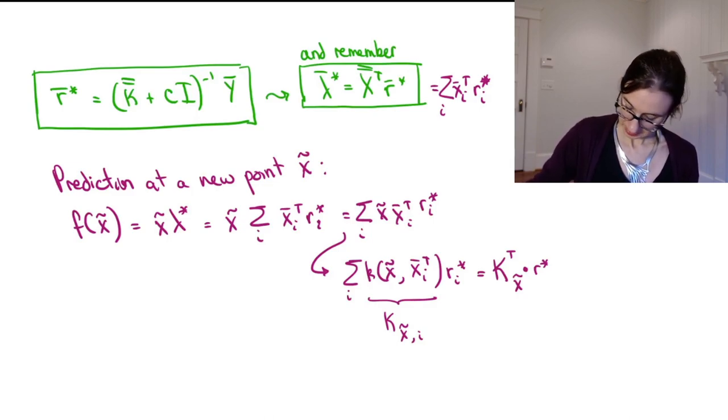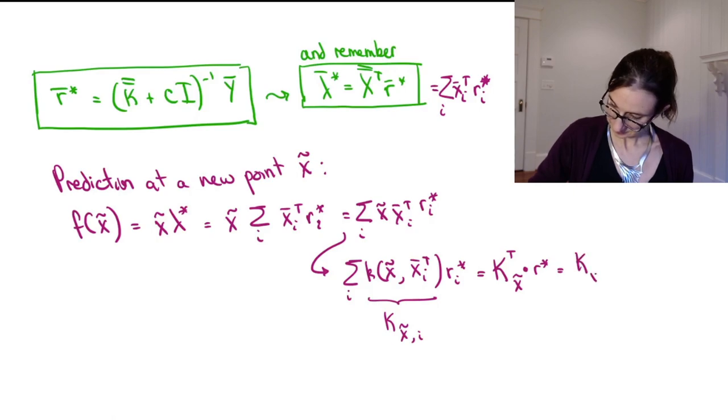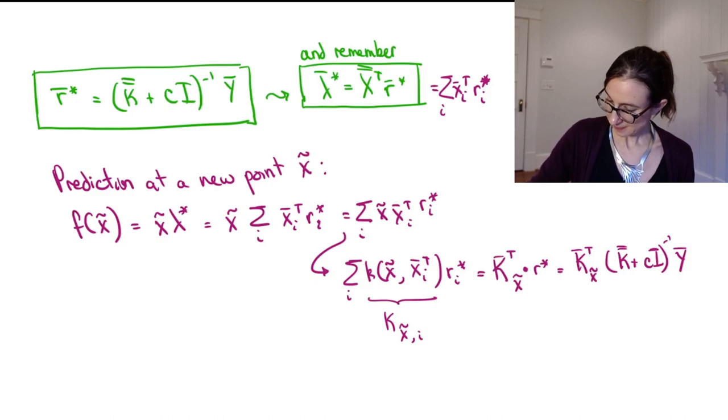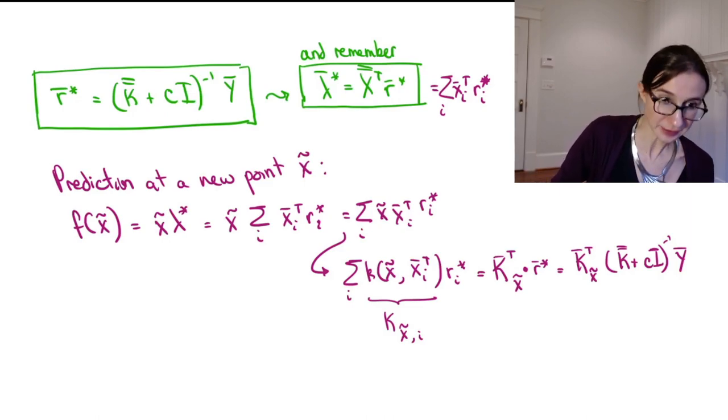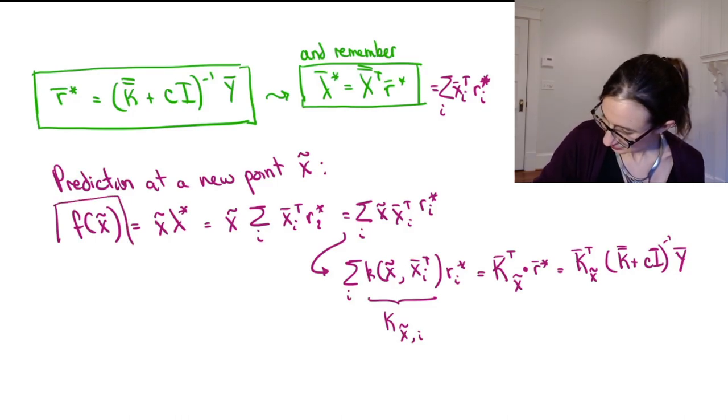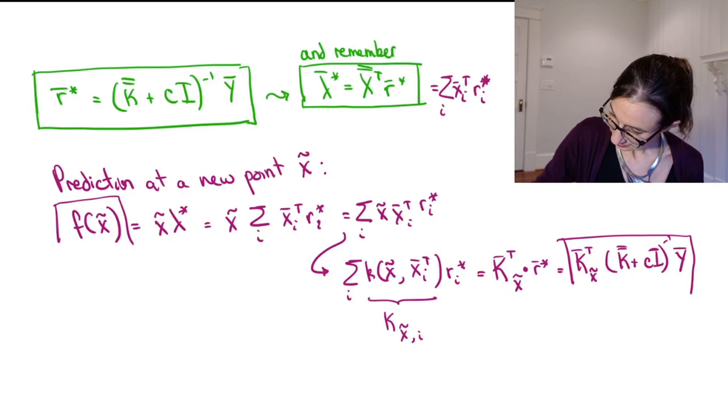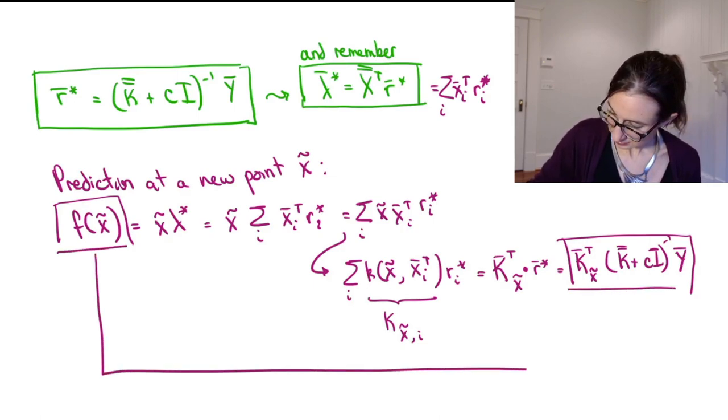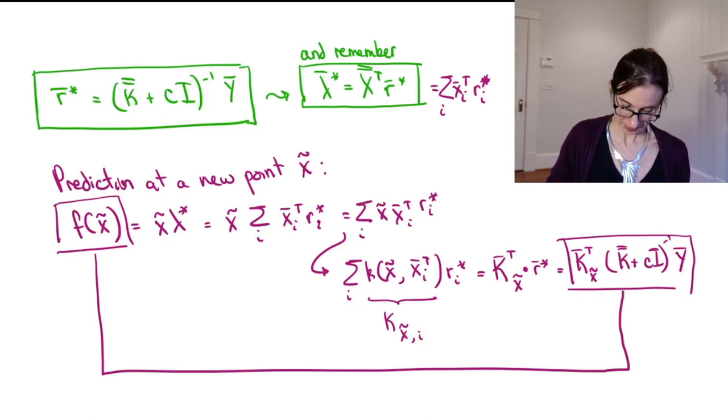oh, I forgot, I'm going to actually write down r star in here. Okay, so r star is K plus cI inverse y. Okay, so that's what f of x tilde is. We've got it. So there's our prediction.